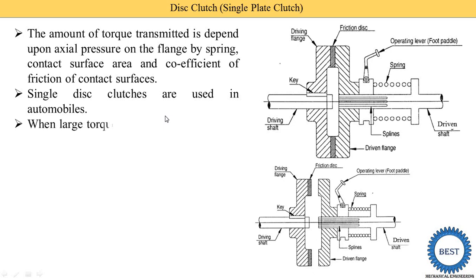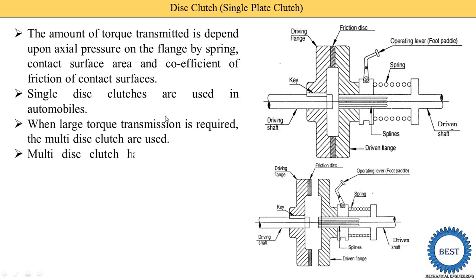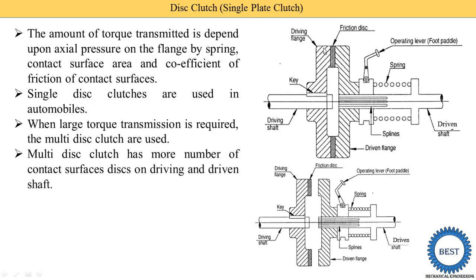Single disc clutch is used in automobiles and various vehicles. When large torque transmission is required, multi-disc clutch is used. When we use the multi-disc clutch, the friction area — that is the contact area — is increased. When the contact area is increased, the amount of torque transmission is increased.